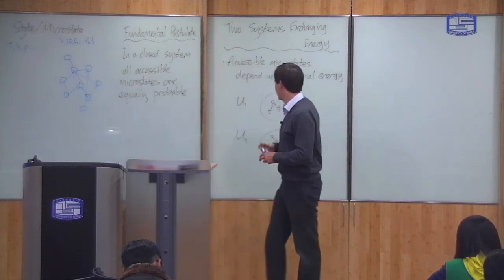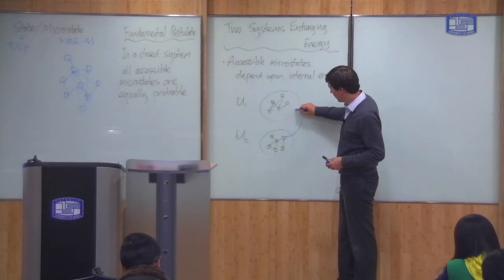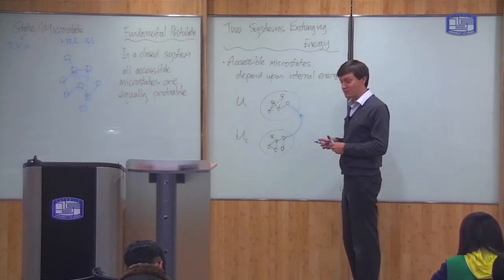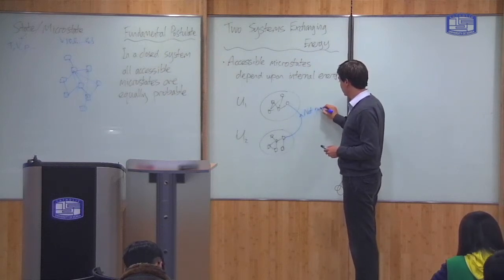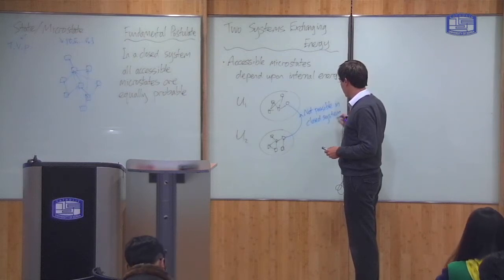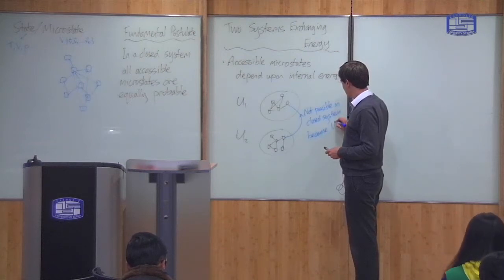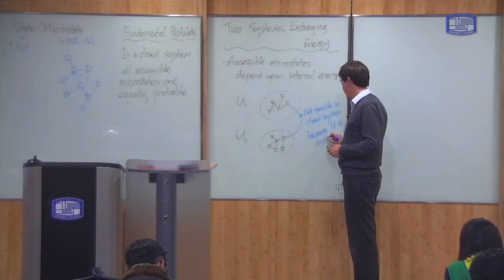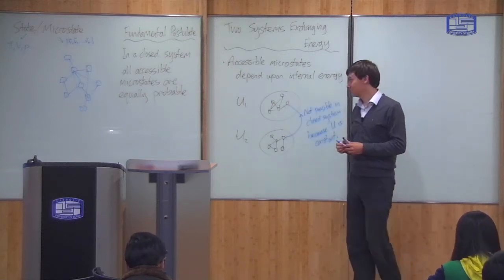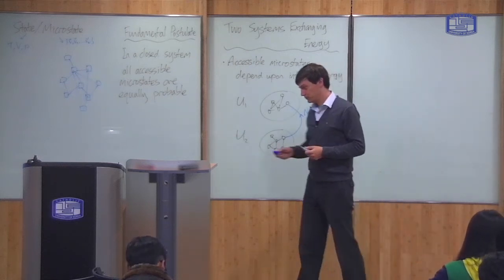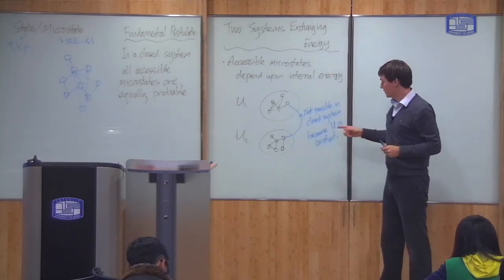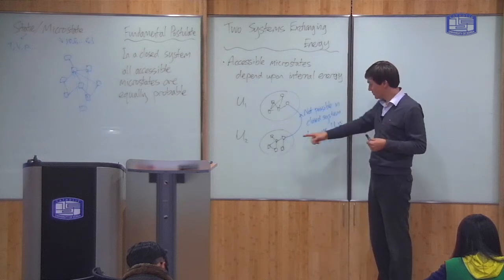In a closed system, because the energy is fixed, you can't go from a microstate at one energy to a microstate at another energy. It's not possible to go from a microstate here to a microstate there in a closed system, because the energy is fixed. A conservation of energy in a closed system tells you that the energy must be constant, so therefore you cannot go from a microstate here into a microstate there.